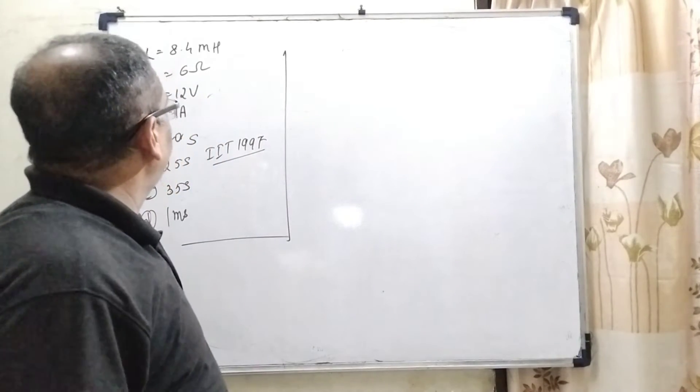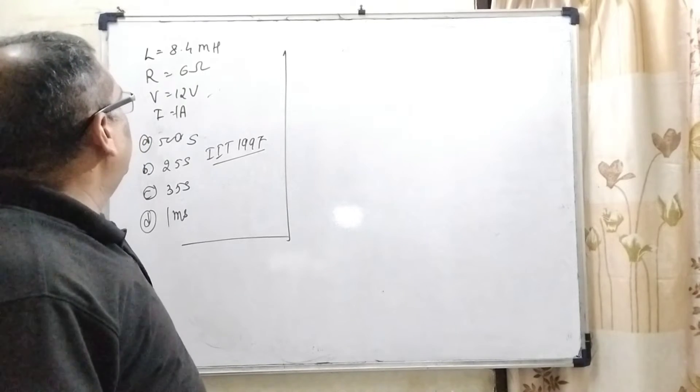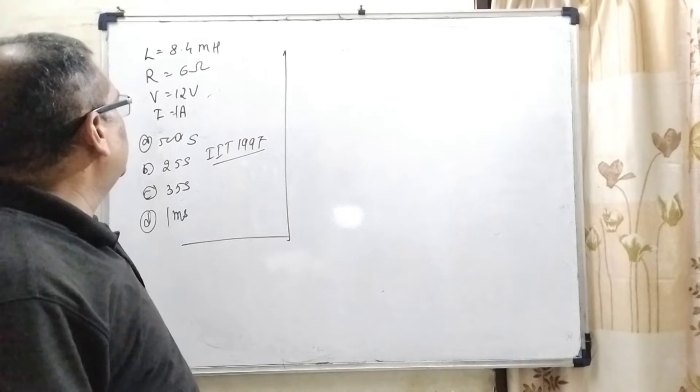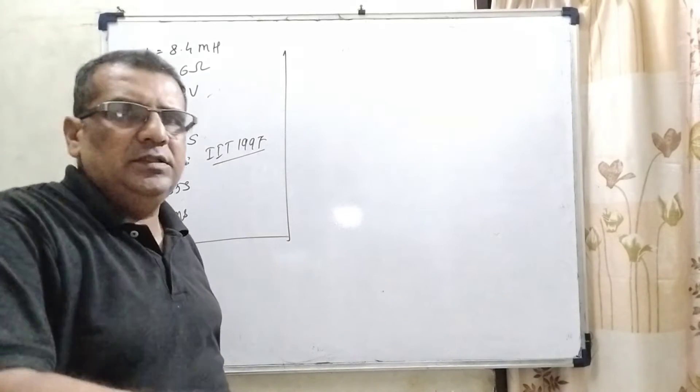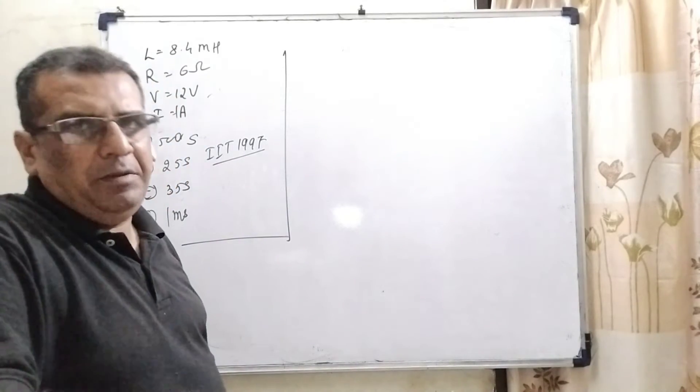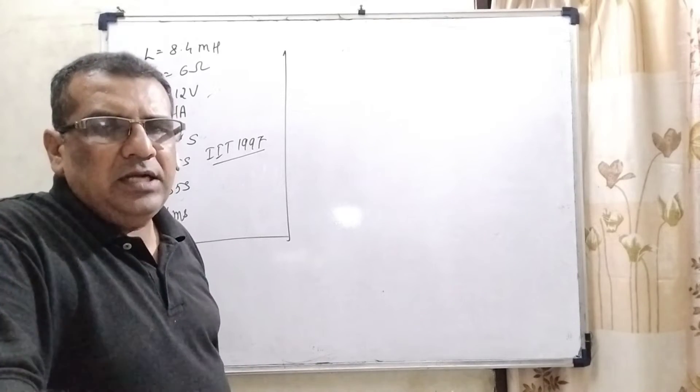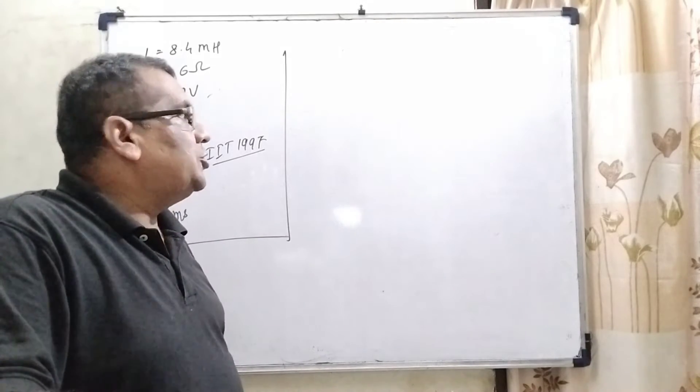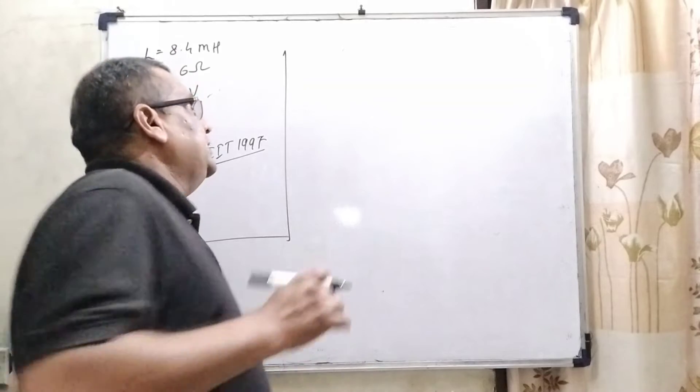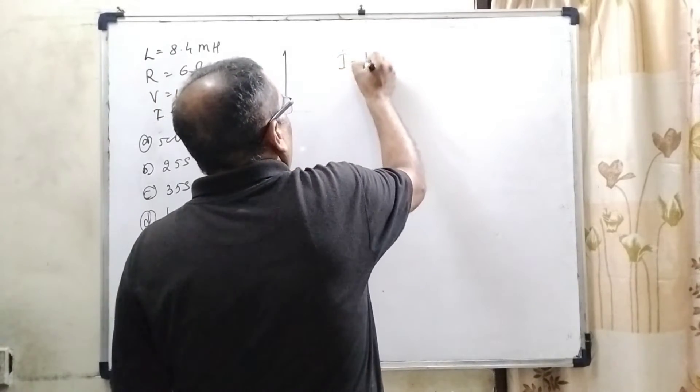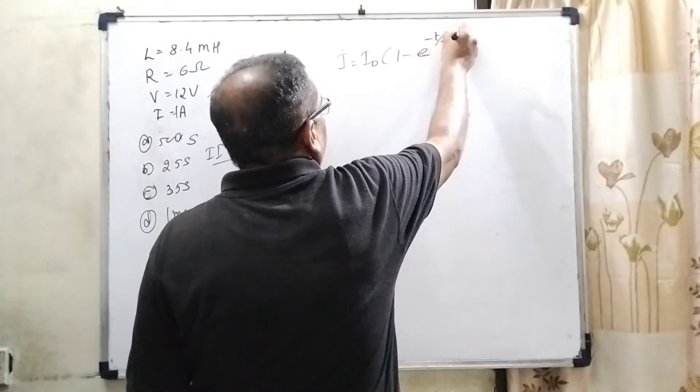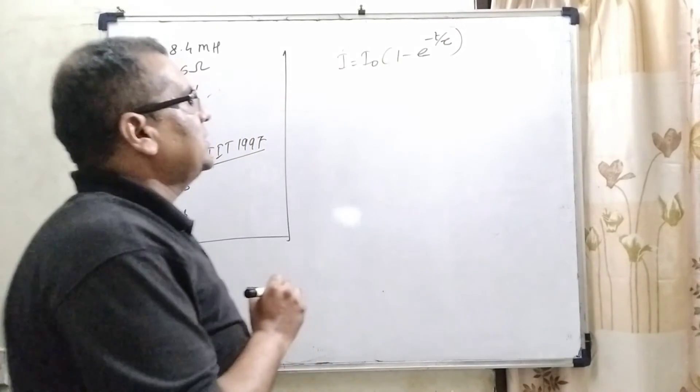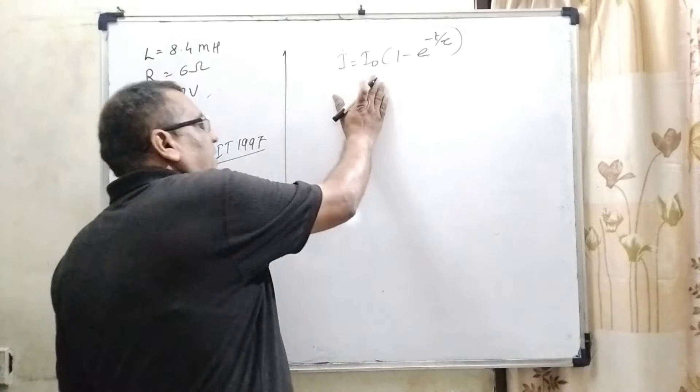Now, in this question, we are given inductance 8.4 mH, resistance is 6 ohm, potential is 12 volt, and RMS current is 1 ampere. In LR circuit, the equation shows that current and time, that is I equal to I0 times 1 minus e raised to power minus t by tau. Here tau is time constant and I0 is the peak value.